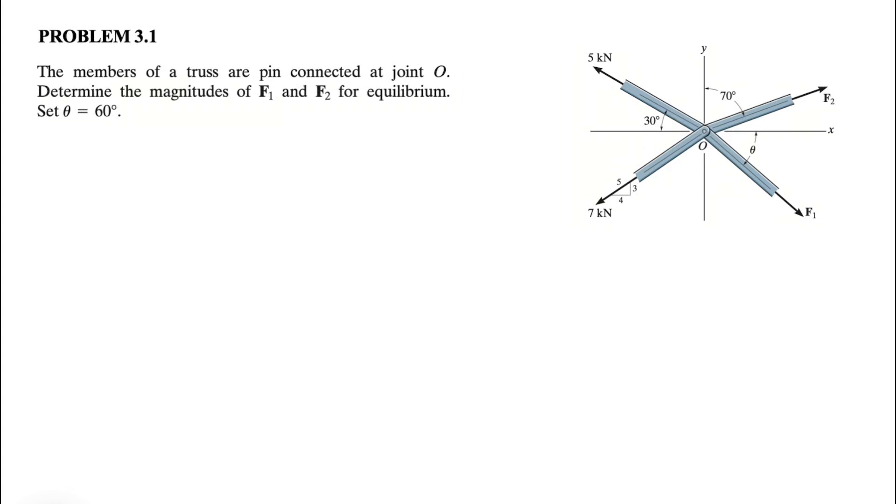Hi everyone, welcome to the channel. We're going to be solving the first question from the third chapter of the Hibbeler textbook. We have the members of a truss that are pin connected at joint O. We need to determine the magnitude of F1 and F2 for equilibrium condition, and we also know that theta in the figure is 60 degrees.